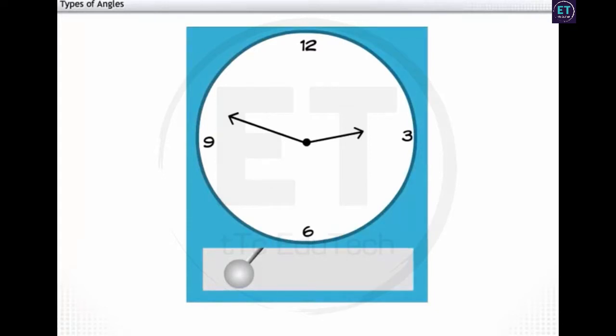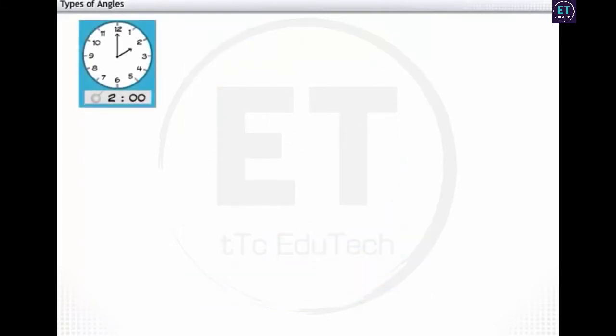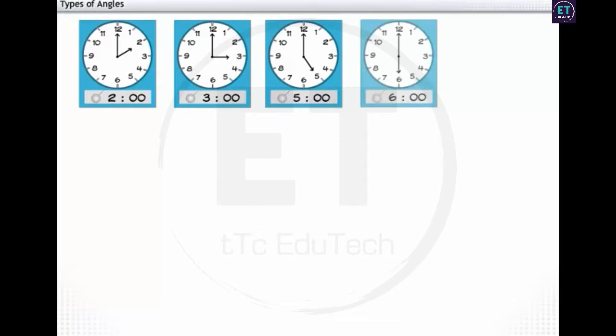First, let's quickly review our understanding of the different types of angles based on their measures. We'll use a clock for this activity. Let's assume the two hands of the clock represent two rays. Now, let's note down the measure of angles at different times.